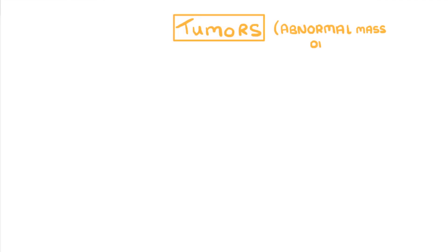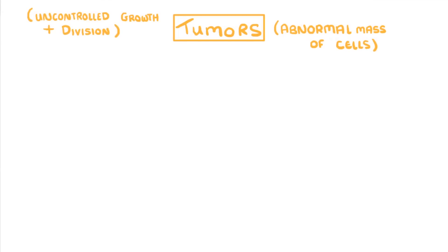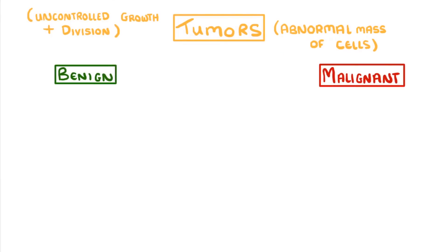A tumour is an abnormal mass of cells that forms when a group of cells undergo uncontrolled growth and division. Importantly, there are two different types of tumours: benign and malignant, and it's only the malignant ones that are considered to be cancer.